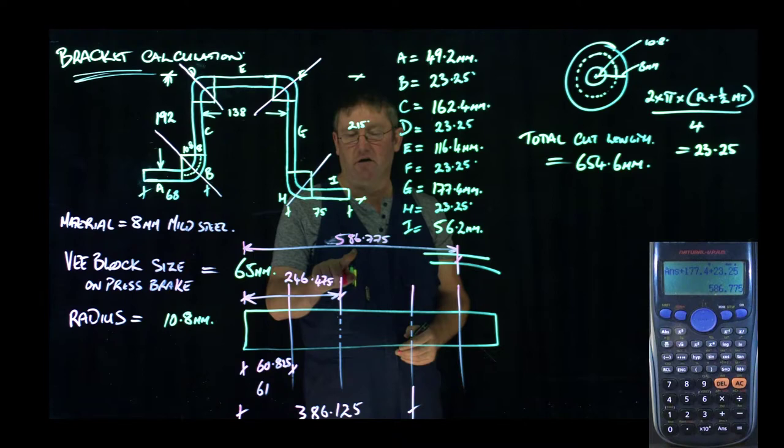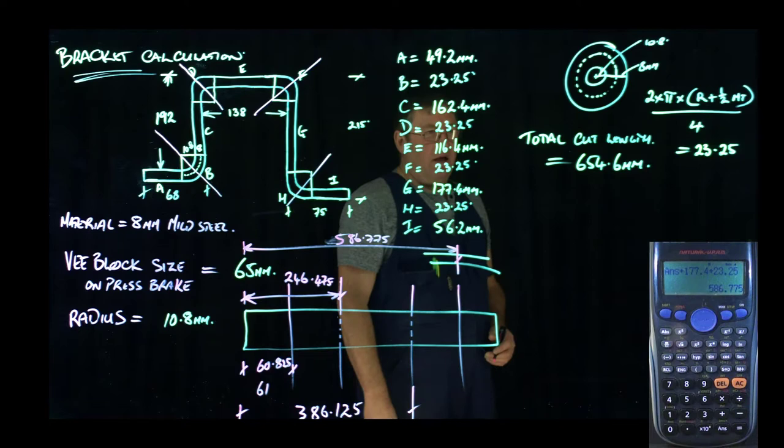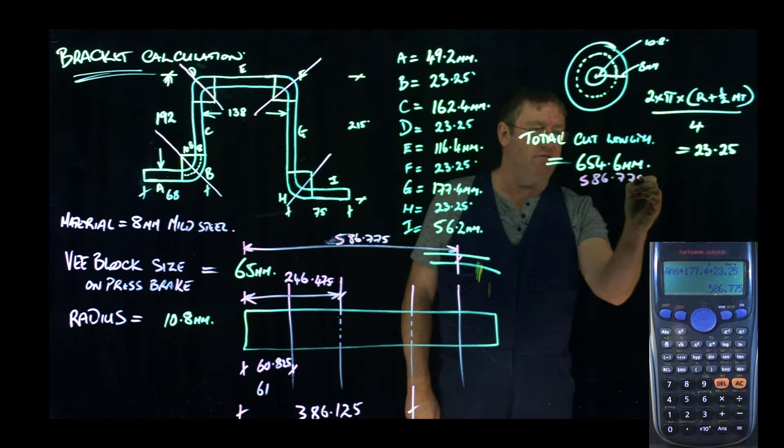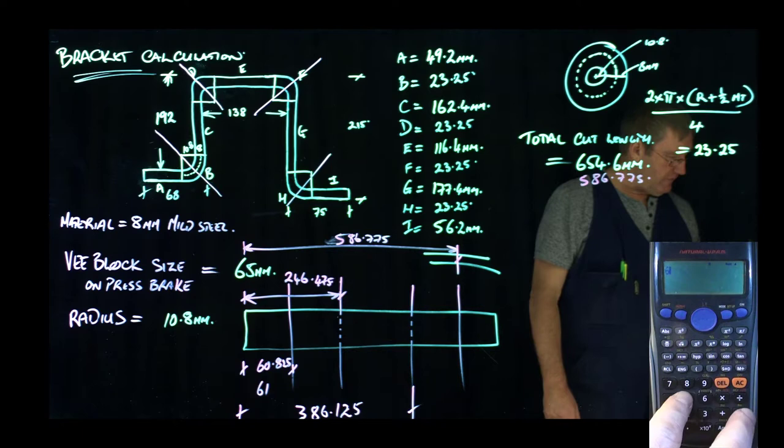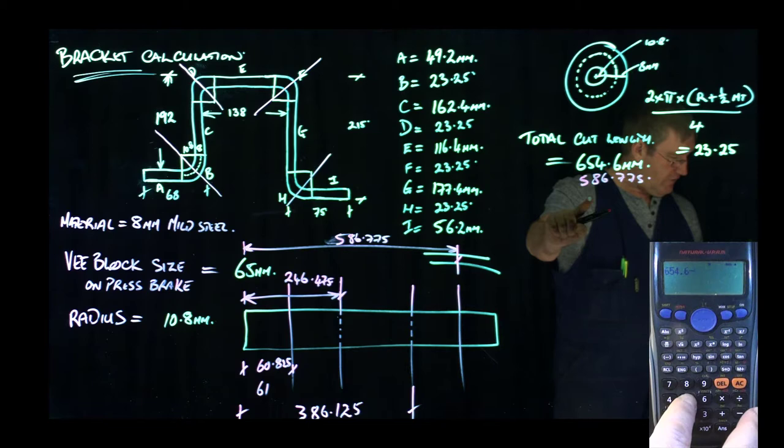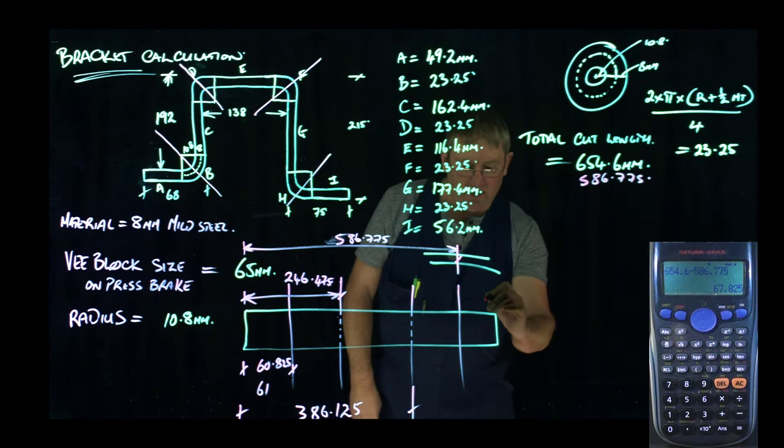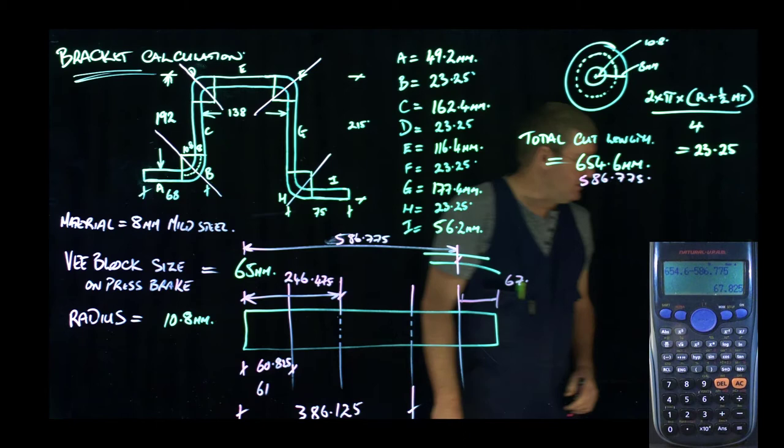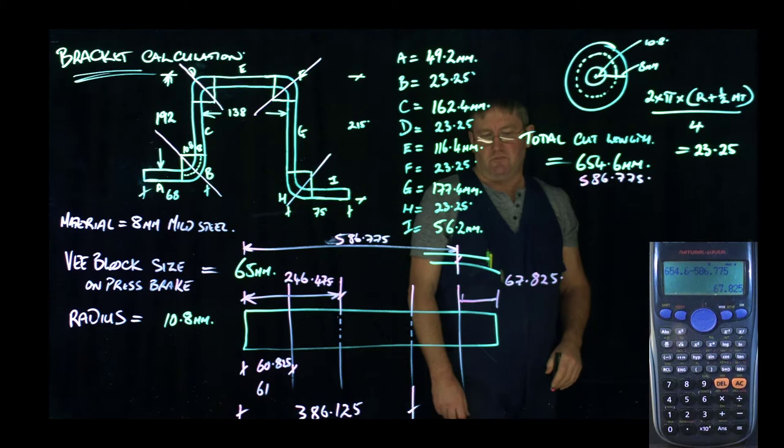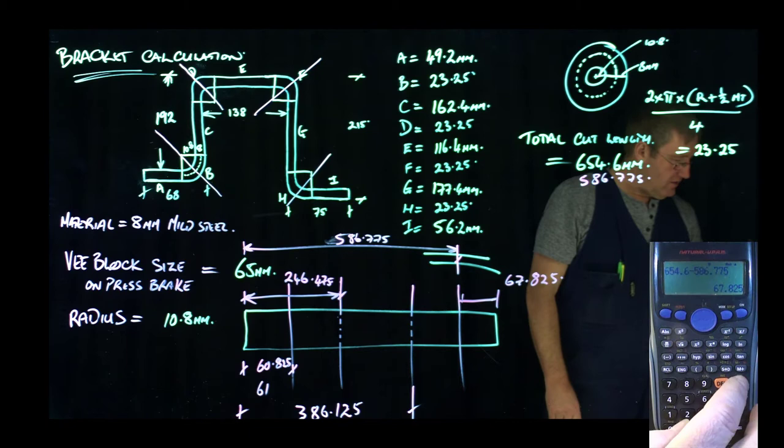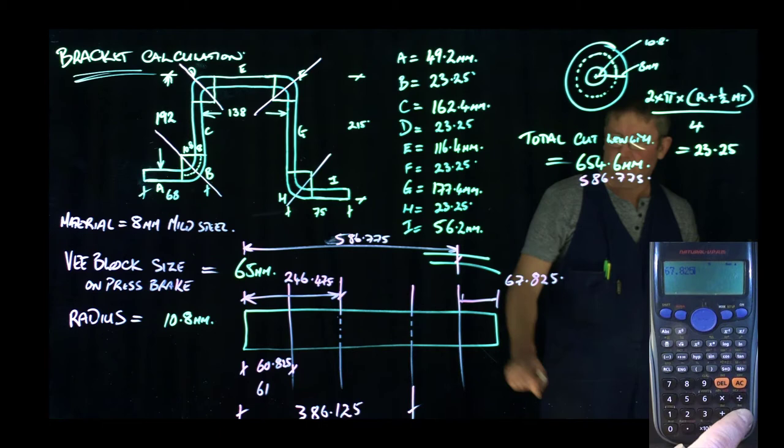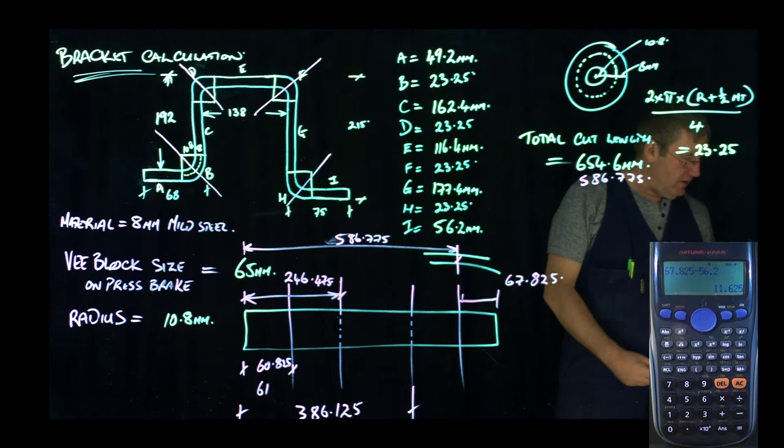And if we just work out, we'll take our 586.775 and we'll just work out and make sure that I've got this correct here. So 654.6 minus 586.775 equals. It's saying that this distance from the end to here would be 67.825 millimeters. And that is actually, if I minus 56 off that. So I shouldn't have wiped that off the screen. 67.825 minus 56.2. We come back to 11.625. We times that by 2, that gives us the length for our corner. So we've worked it out extremely accurately.